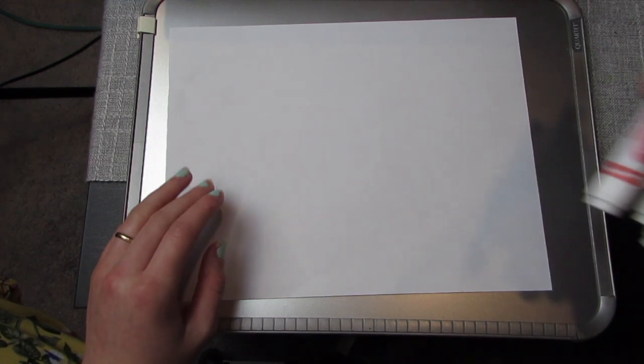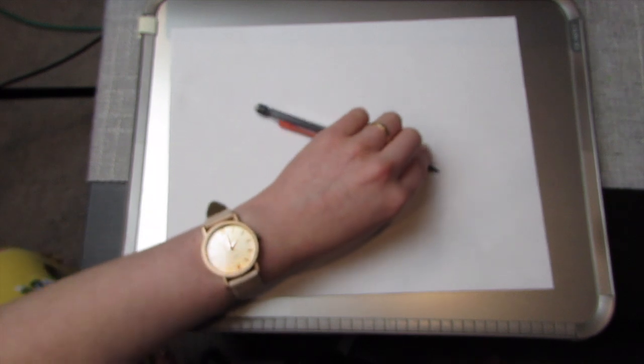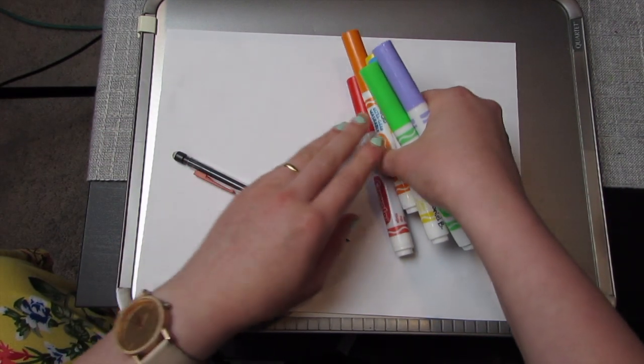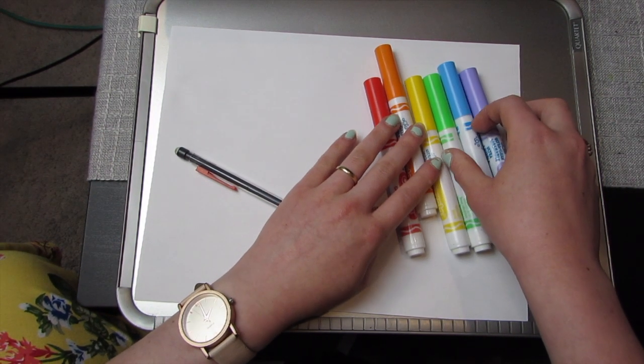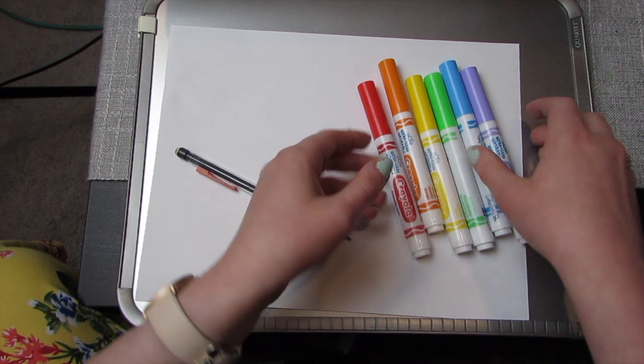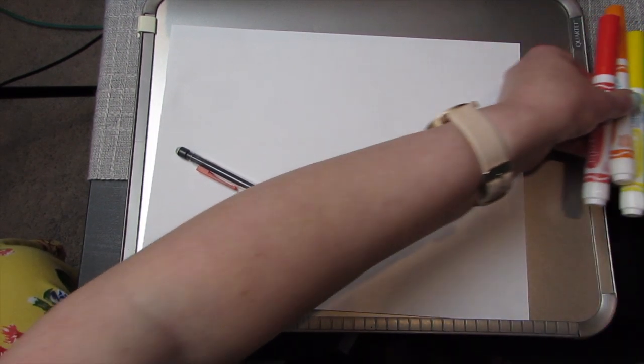So today we're going to do some rainbow writing, and the first thing we're going to need is a piece of paper, a pencil, and some markers. So I've got the colors of the rainbow right here: red, orange, yellow, green, blue, and purple, or violet.